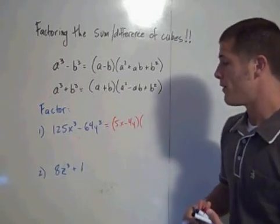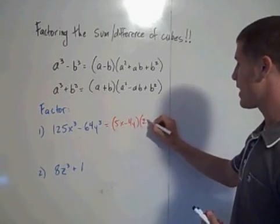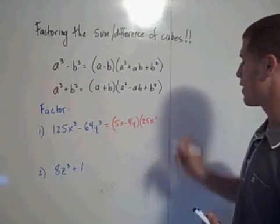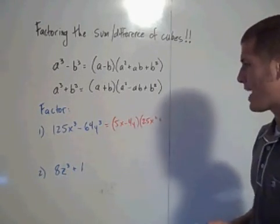Remember, our a value was 5x, so it's going to be 25x squared, and then plus our a value times our b value.